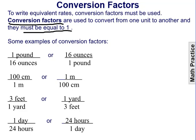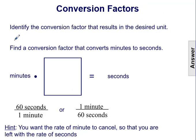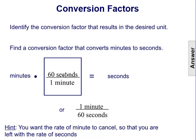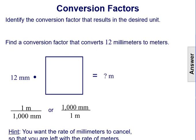We need to identify which conversion factor is most helpful in a problem — specifically, the one that results in the desired unit. For example, to convert minutes to seconds, since minutes is in the numerator, we need a conversion factor with minutes in the denominator, like 60 seconds over one minute. That cancels out the unit of minutes and leaves us with 60 seconds.